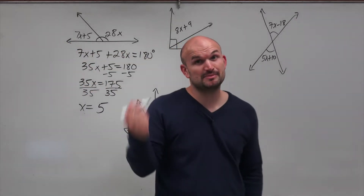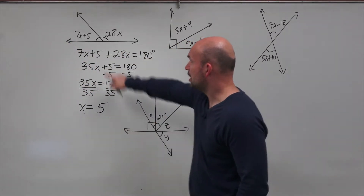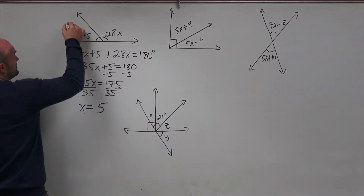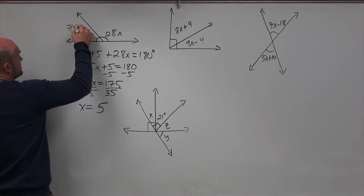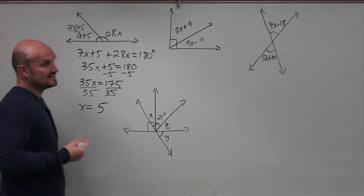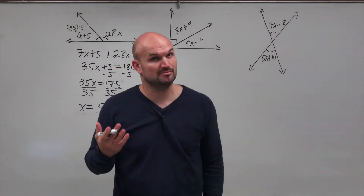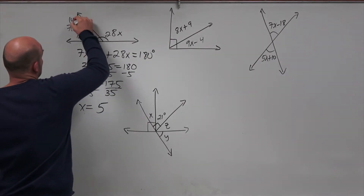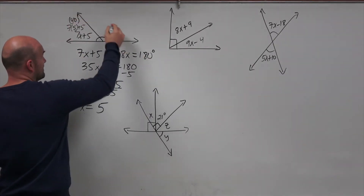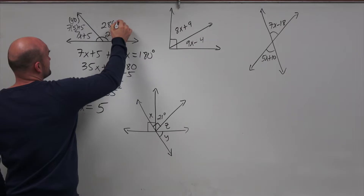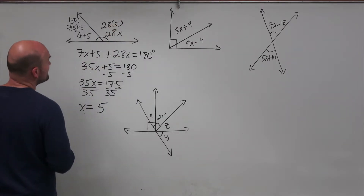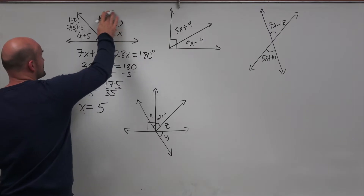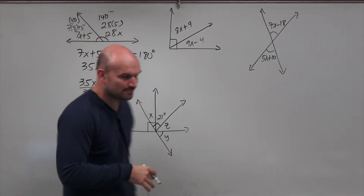If I needed to figure out what these angle measures are, all I need to do is replace x with 5. So 7 times 5 plus 5: 7 times 5 is 35, plus 5 is 40. So that angle is 40 degrees. And then 28 times 5 is 140 degrees.